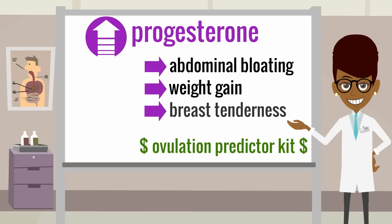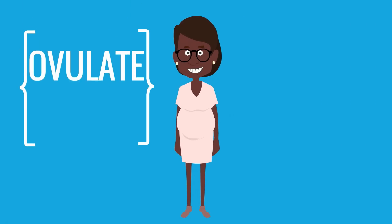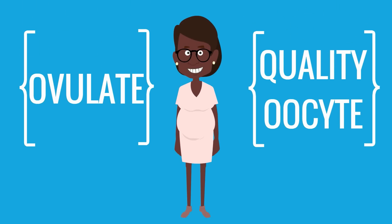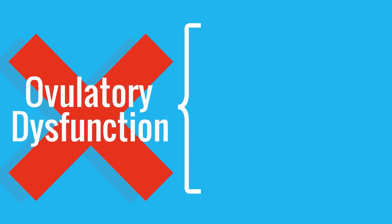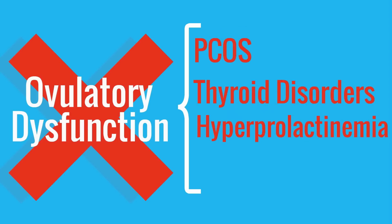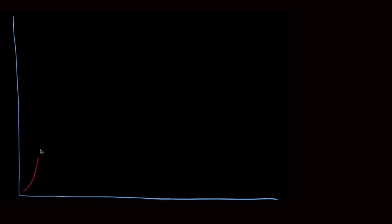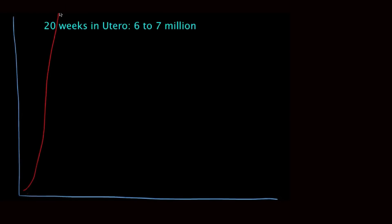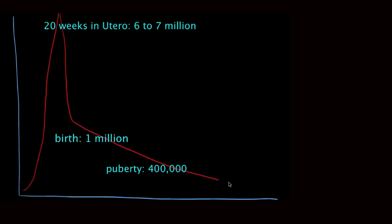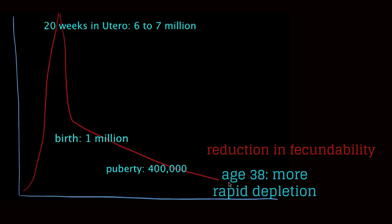These ovulation predictor kits can be quite expensive. In order to achieve pregnancy, a woman has to ovulate a quality oocyte. Common causes of ovulatory dysfunction in reproductive age women include polycystic ovarian syndrome (PCOS), thyroid disorders, and hyperprolactinemia. A woman's age also has a significant impact on ovulation and oocyte quality. As a woman ages, so do her oocytes. A female has about 6 to 7 million oocytes at 20 weeks in utero, born with about 1 million, and about 400,000 at the time of puberty, with more rapid depletion starting at around age 38, resulting in a marked reduction in fecundability in a woman's late 30s.